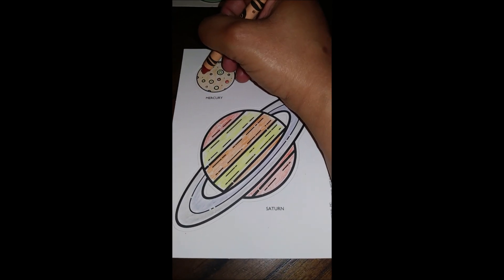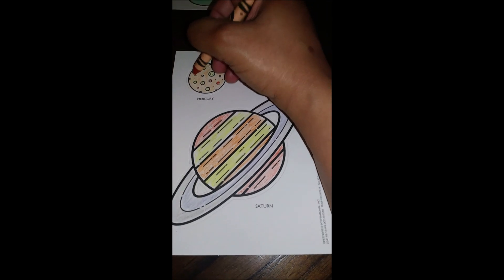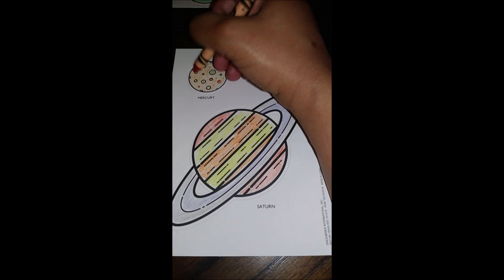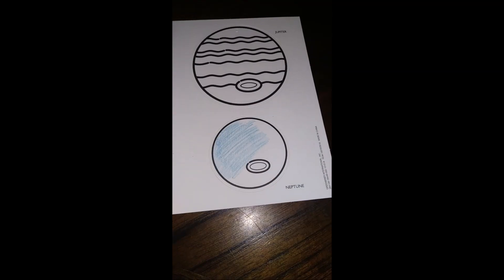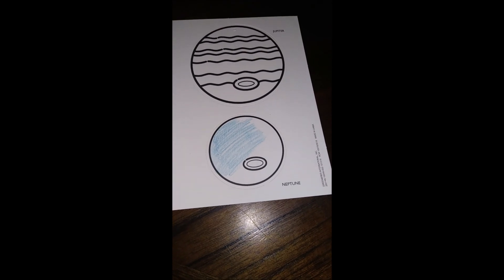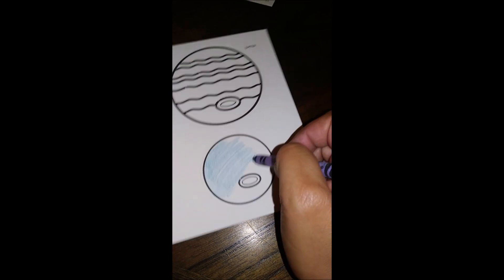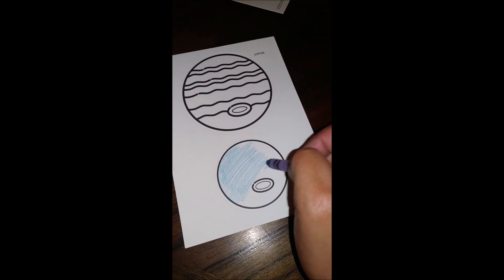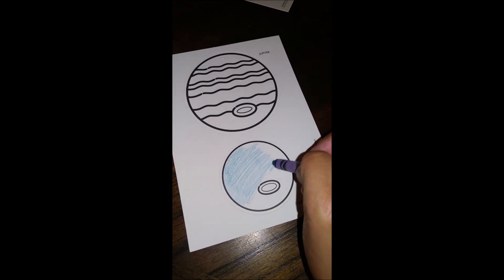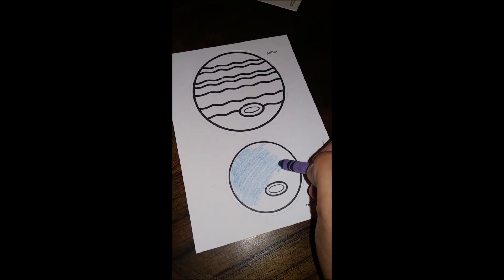I'm wrapping up Mercury here with some brown and tan and yellow. Now moving on to Neptune and Jupiter, I'm going to make this one blue. And maybe Jupiter will be with some reds and yellows.